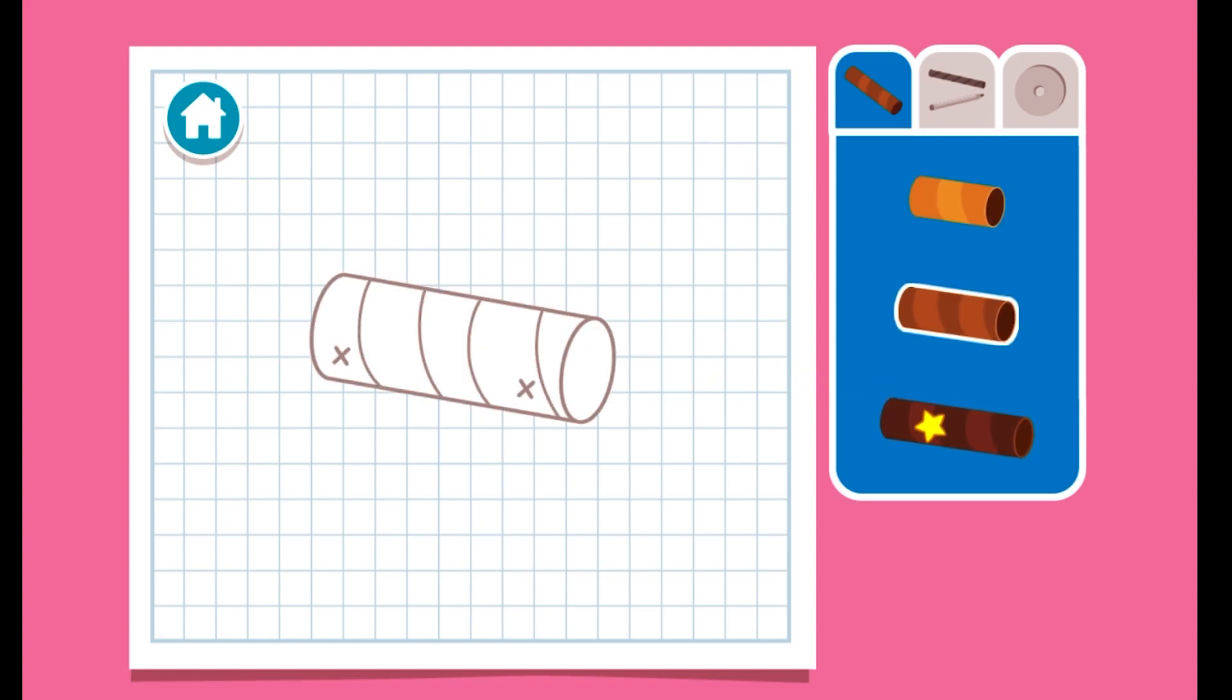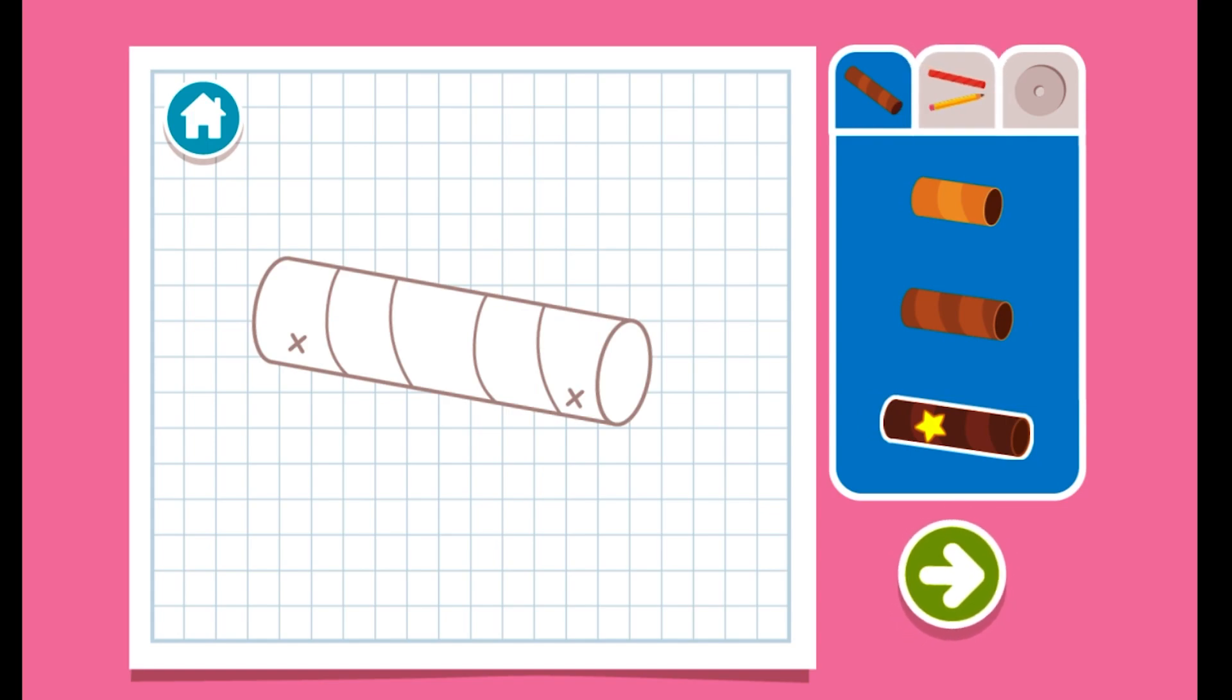What size tube should we use? Next, let's choose something for the axle. That's the thing that holds the wheels on.